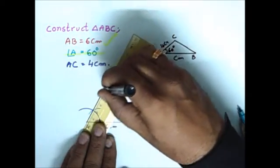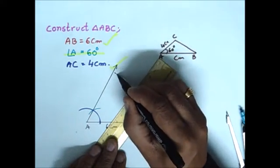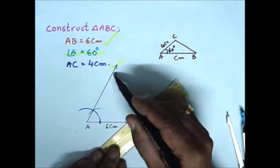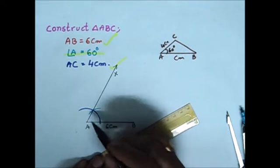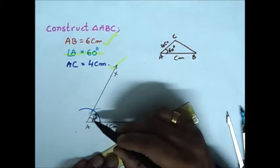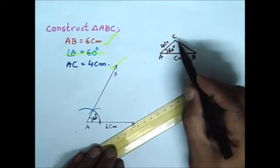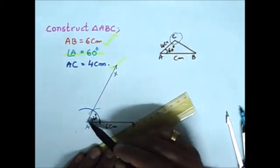So we have to construct a ray now which is marked as AX. This AX makes 60 degrees to the line segment AB. Now on this ray, you have to identify the point C at a distance of 4cm.